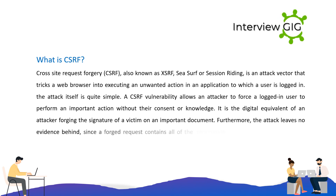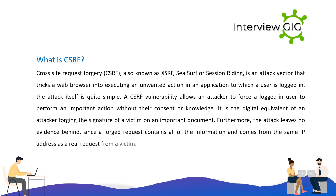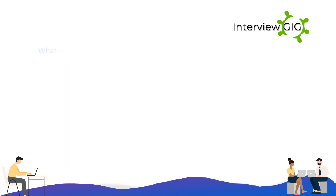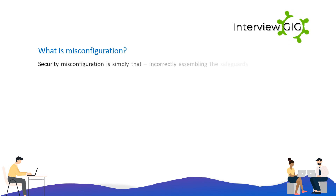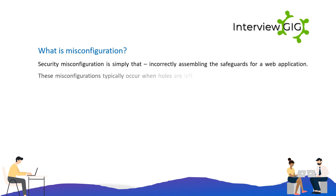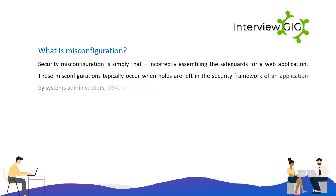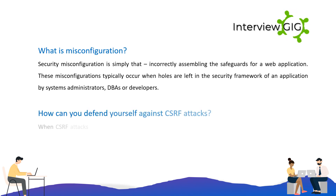Furthermore, the attack leaves no evidence behind, since a forged request contains all of the information and comes from the same IP address as a real request from a victim. What is misconfiguration? Security misconfiguration is incorrectly assembling the safeguards for a web application. These misconfigurations typically occur when holes are left in the security framework of an application by systems administrators, DBAs, or developers.